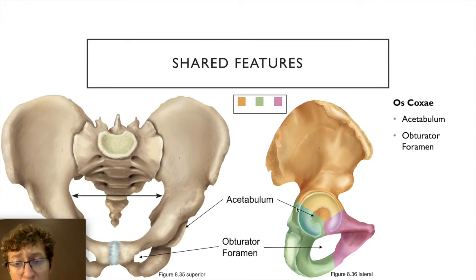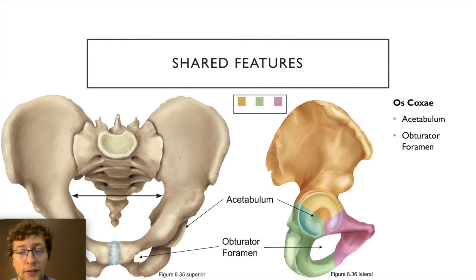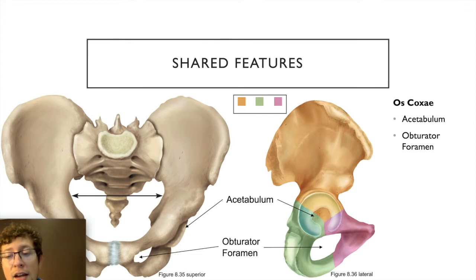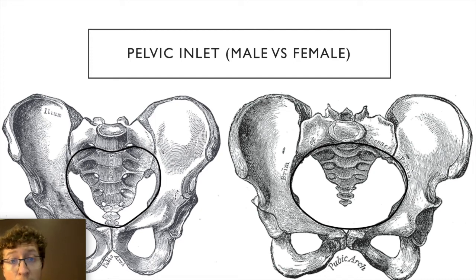All three bones — ilium, ischium, and pubis — contribute to the acetabulum, the socket for the ball-and-socket hip joint, where the head of the femur inserts. The ischium and pubic bones also form the obturator foramen, through which the obturator nerve passes.